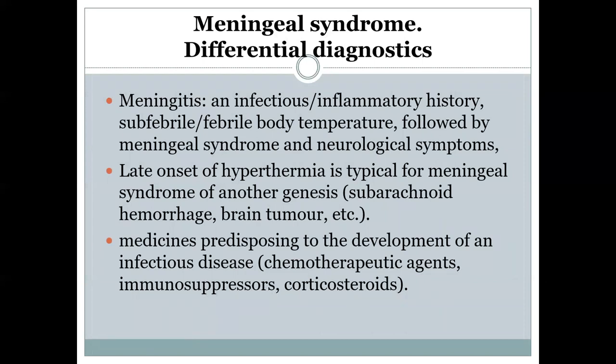In clinical practice, the term meningitis usually refers to inflammation of the soft pia mater. Regarding differential diagnosis of meningitis, first we need to determine if there is an infectious or inflammatory history. If the person has subfebrile or febrile body temperature followed by meningeal or neurological symptoms — note that later onset of hyperthermia is more typical for meningeal syndrome of another genesis, such as subarachnoid hemorrhage or brain tumor.